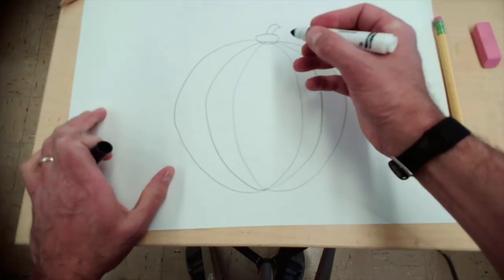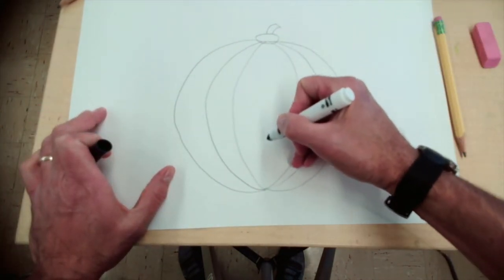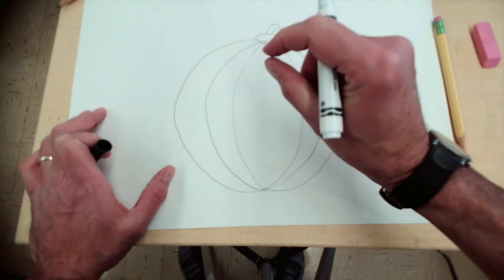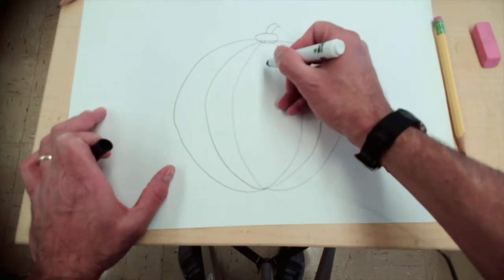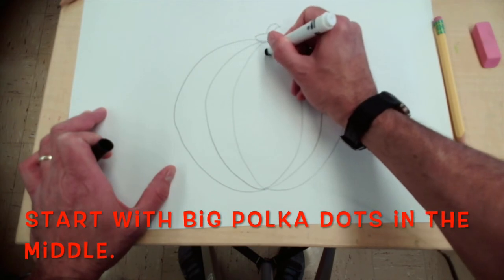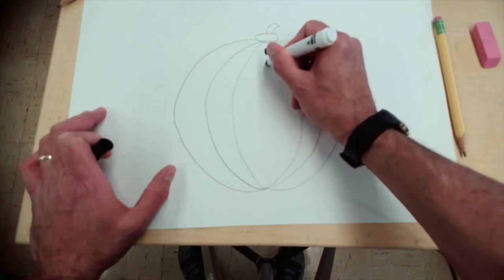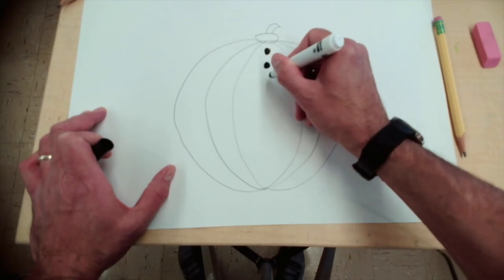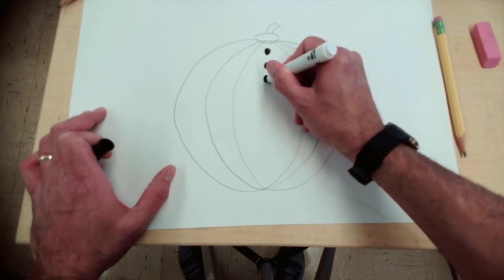Now, the best way to do the polka dots is to make one line of polka dots the same size. So, let's do it from the center. So, I'm going to go like this, look. One polka dot, two polka dots, three...